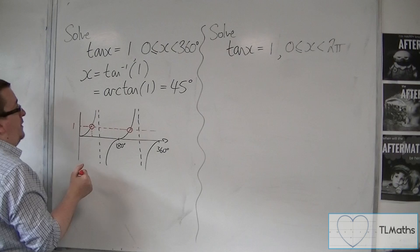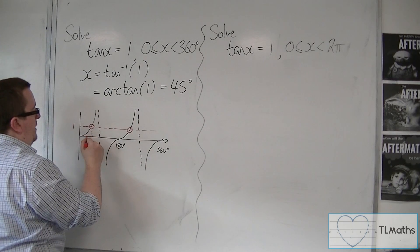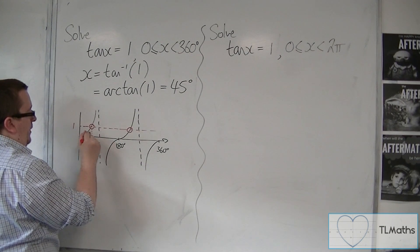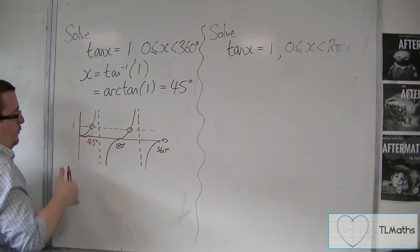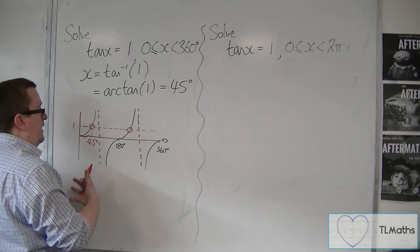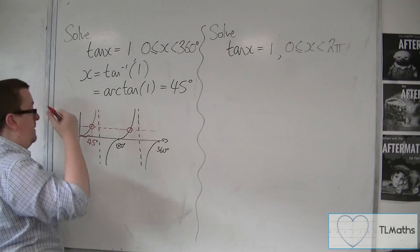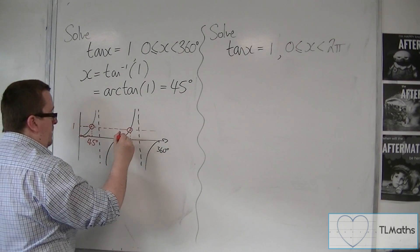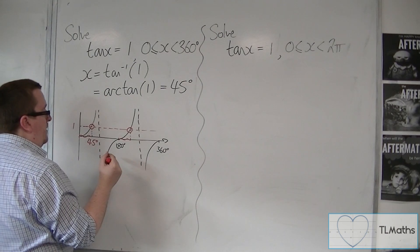So this first solution is the 45 degrees that I found there. So that distance from zero to 45 is 45 degrees. And because tan is symmetric, like sine and cosine, and repeats itself, this distance must also be 45 degrees.